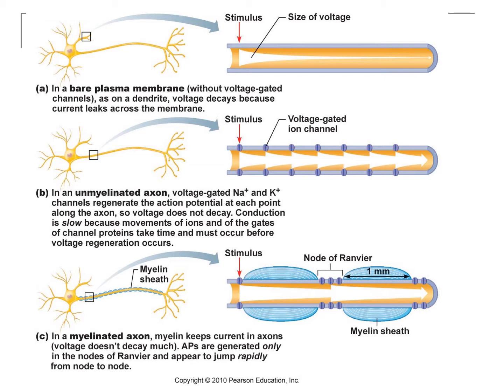In an unmyelinated axon, you have the point of sodium entry, but this moves without loss of signal all the way down the axon because at intervals you've got voltage-gated ion channels that keep renewing and regenerating that action potential. However, this conduction is relatively slow because the ions moving and the opening and closing of the gates take some time before voltage regeneration can occur.